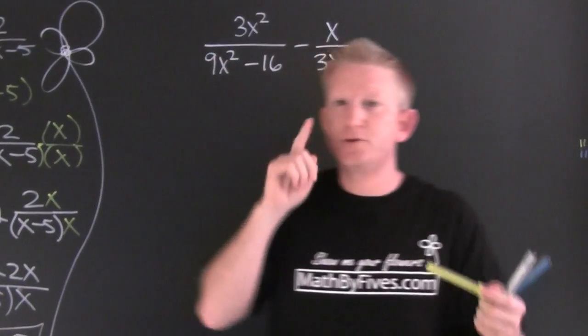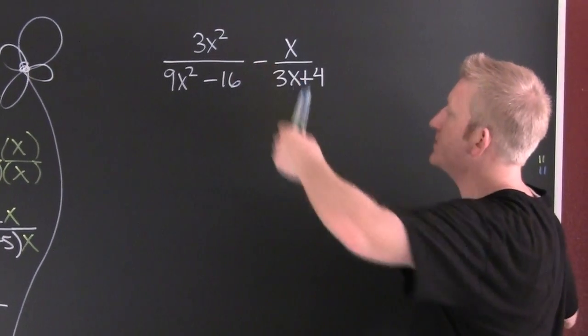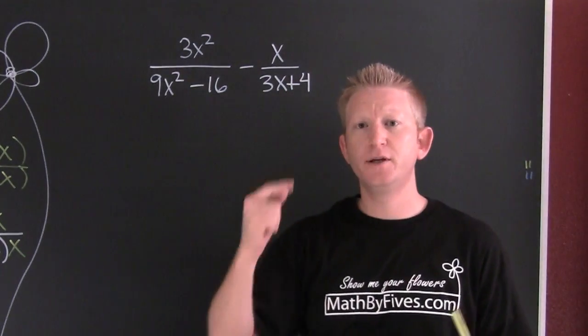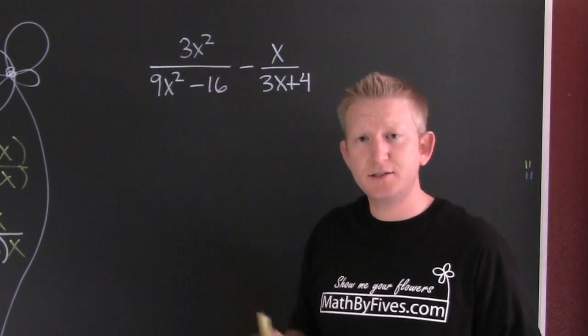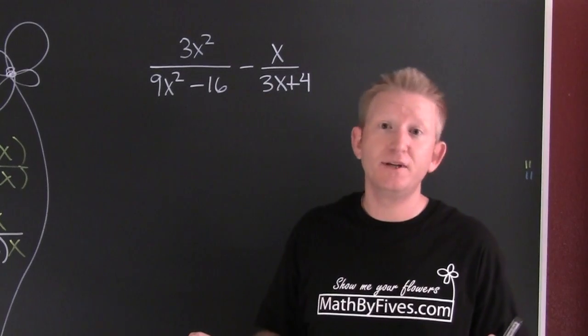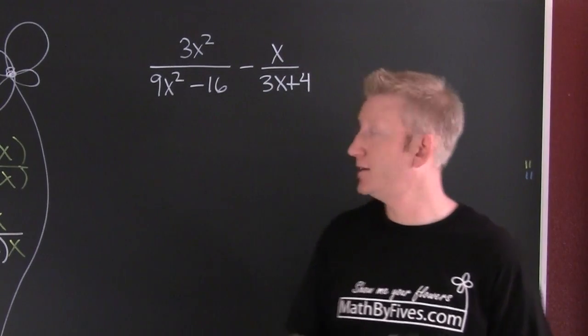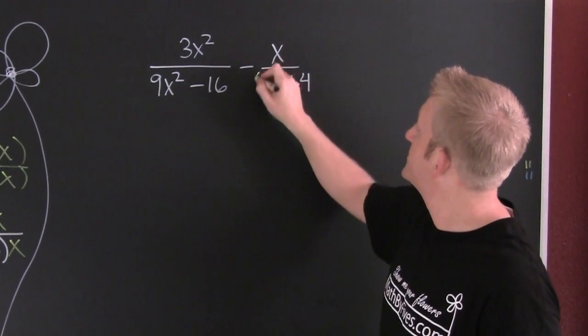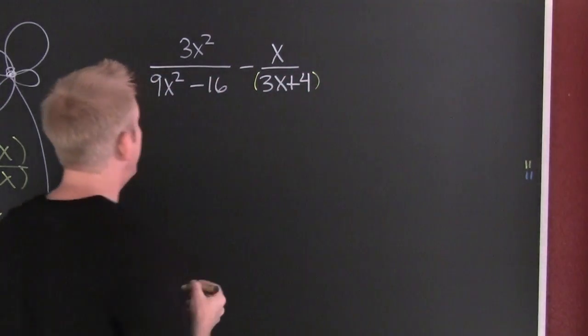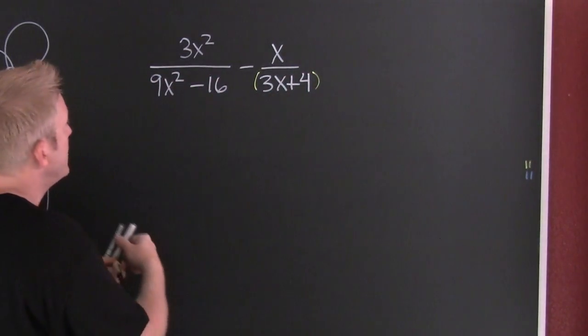But what happens if we were trying to subtract? We can't subtract the two because we don't have a common denominator. In order to find a common denominator we need to find the factorizations of each denominator. We see there's nothing I can pull out of this one. But can I factor that one? Oh I think I can.